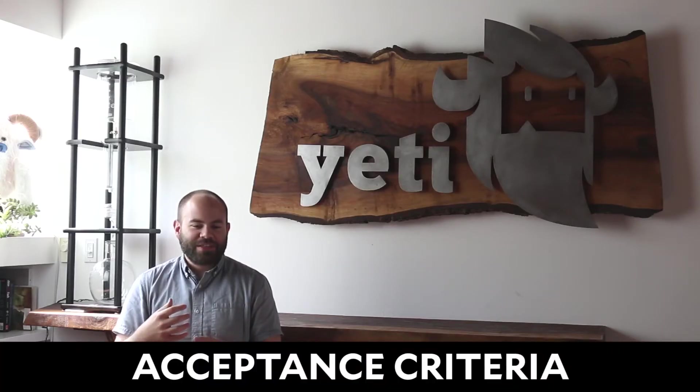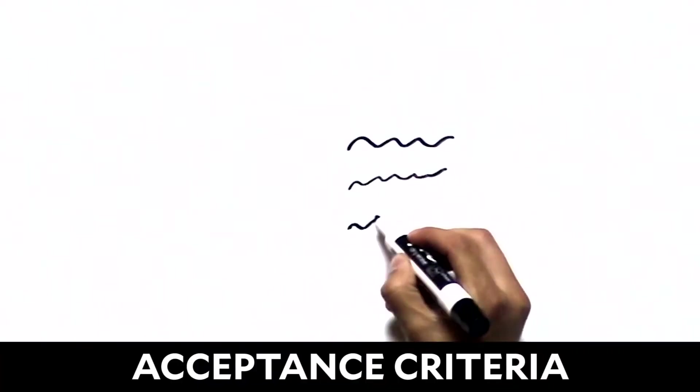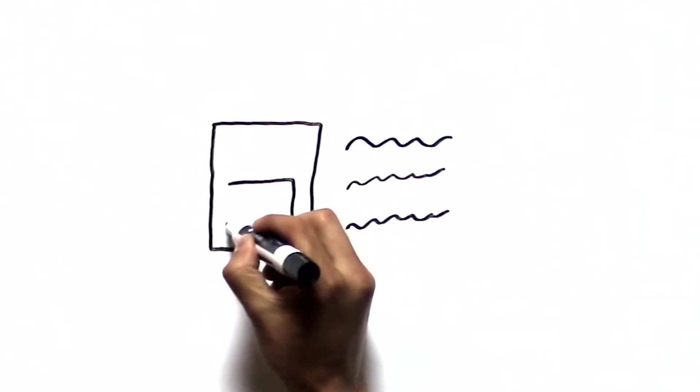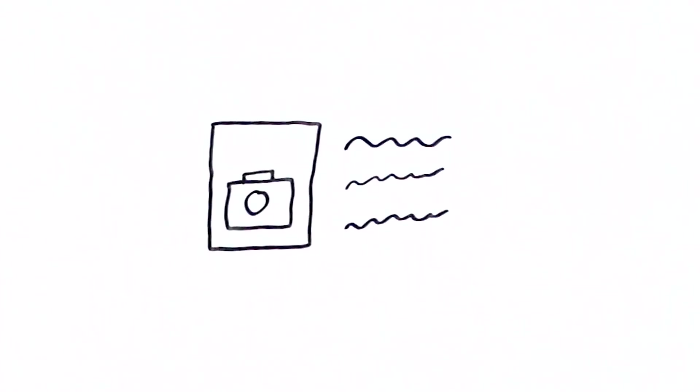Acceptance criteria is a list of detailed information about a user story to help define when that user story is finished or if some parts of it may have been forgotten by the person who was working on it.